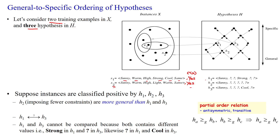Now we are deriving the first hypothesis. You look at that: sunny, two quotient symbols, strong, and two quotient symbols. We have to check if it is matching with X1 and X2. So hypothesis H1 has sunny — it is matching — quotient symbols accept any values, here it is strong and here also it is strong, then the remaining are quotient symbols accepting any values from the fifth and sixth attributes. So hypothesis H1 is consistent, meaning it satisfies training sample X1.